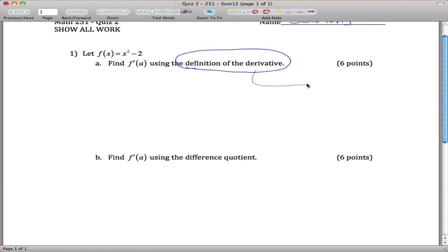Probably good to know what that is. Definition of the derivative tells you that f prime of a is equal to the limit as x approaches a of f of x minus f of a over x minus a. So, using this function with this formula, we get that f...